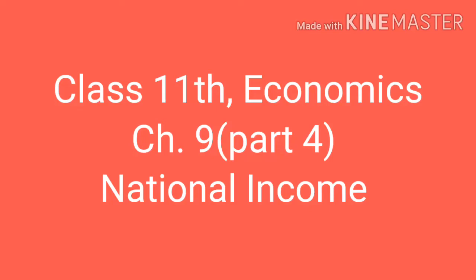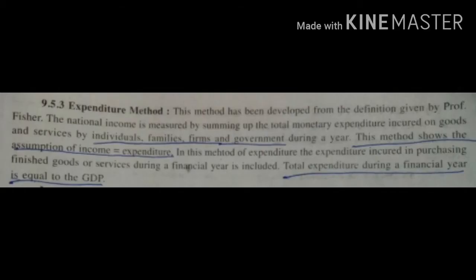Let us continue with the chapter on the expenditure method. All domestically produced goods and services are produced for final use — either by consumers for consumption or by producers for investment. Individuals incur expenditure, that is, they spend money for using these goods and services. The total expenditure in a given year is called the GDP, that is, Gross Domestic Product.